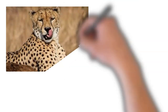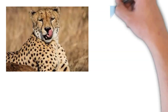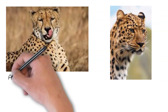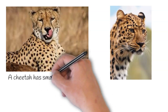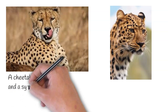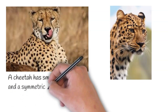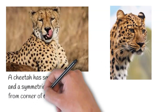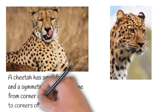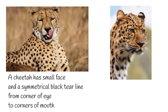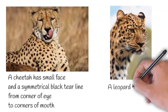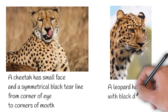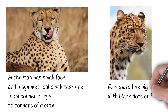Both cheetah and leopard have different looking faces. A cheetah has a small face with a symmetrical black tear line running from the corner of the eye to the mouth. While a leopard has a big face with solid black spots on it.